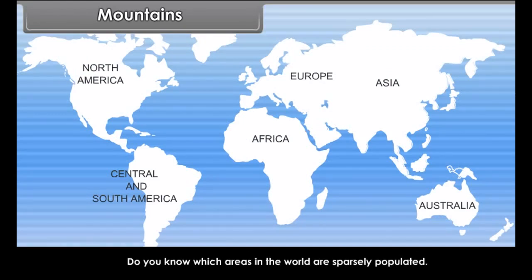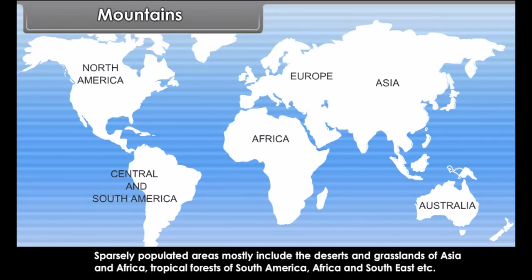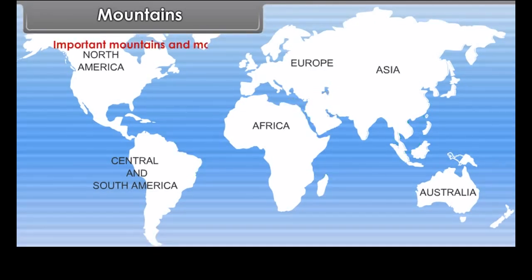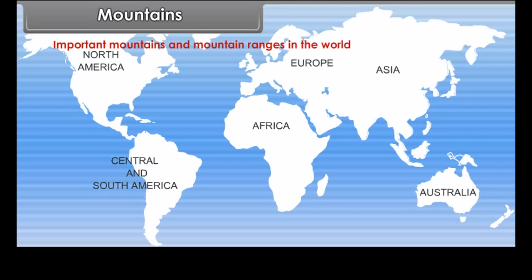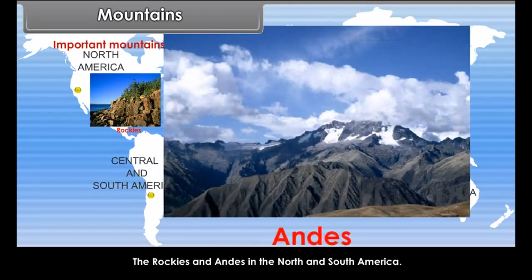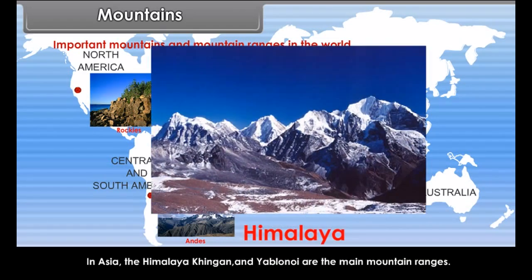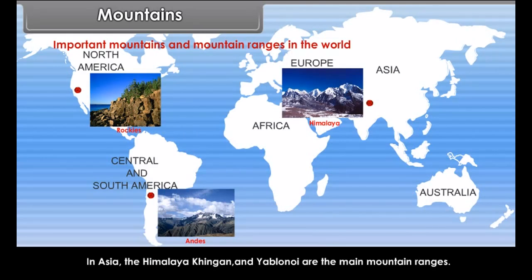Sparsely populated areas mostly include the deserts and grasslands of Asia and Africa, tropical forests of South America, Africa and Southeast, etc. Some of the important mountains and mountain ranges in the world are the Rockies and Andes in North and South America. In Asia, the Himalaya, Kingan and Yablone are the main mountain ranges.